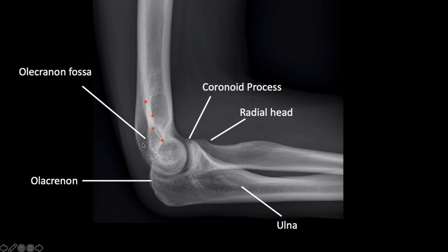This is the olecranon fossa again, that's the olecranon, this is the coronoid process, this is the coronoid fossa, this is the radial head and neck, that's the ulna, and that's the radial tubercle where the biceps tendon inserts. You can see how the coronoid fossa is shallower than the olecranon fossa.